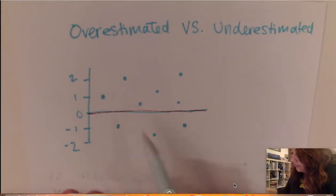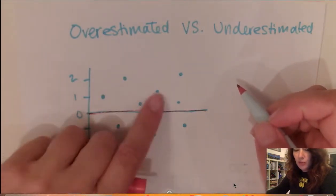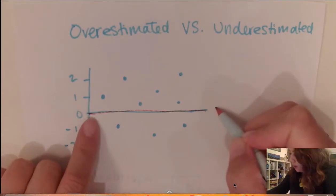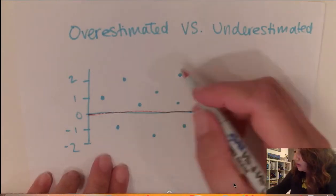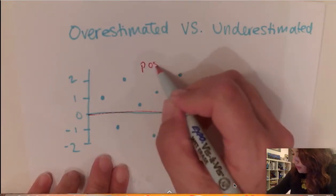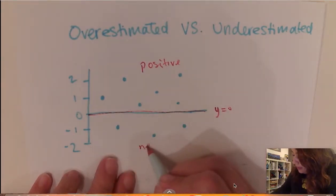From this residual plot we can see we have all these points above the line y equals 0 and all these points that are below. So all these are positive residuals right here and everything below the line is a negative residual.